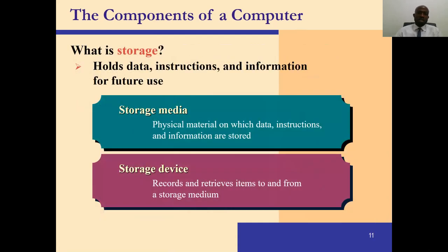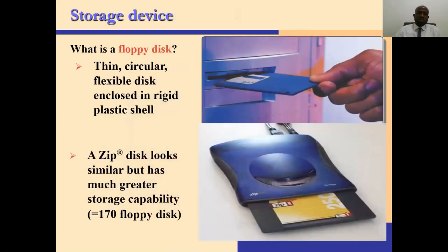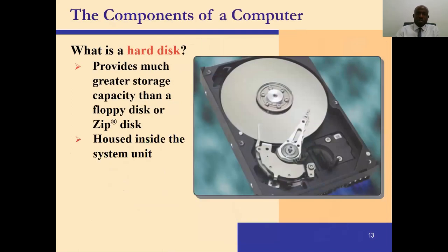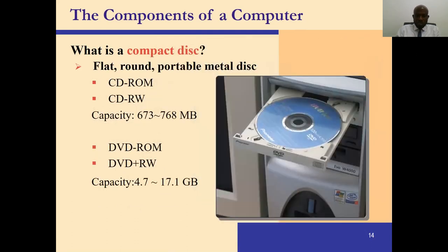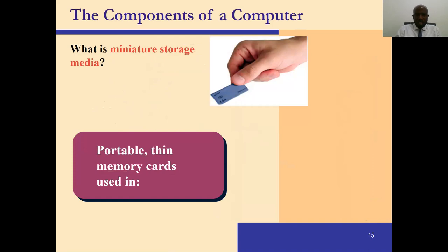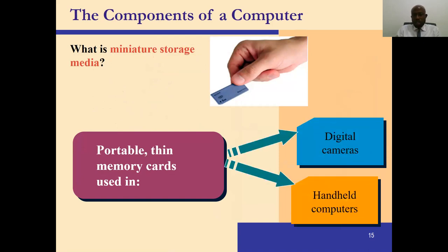Storage holds data, instructions, and information for future use. Storage media is a physical material on which data, instructions, and information are stored. A storage device reads and retrieves items to and from a storage medium — please take your time to understand the difference between a storage medium and a storage device. Examples of storage devices include the floppy disk, hard disk, and compact disk drive. An example of storage media is the memory chip used in digital cameras, phones, and computers.